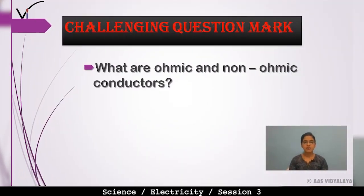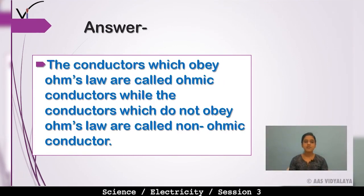Now here is a challenging question: what are ohmic and non-ohmic conductors? The conductors which obey Ohm's law are called ohmic conductors, while the conductors which do not obey Ohm's law are called non-ohmic conductors.